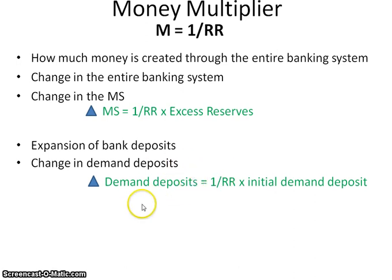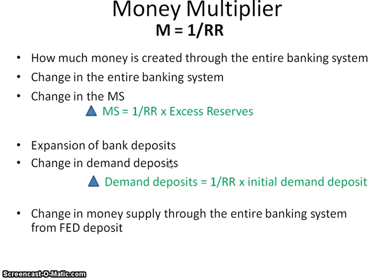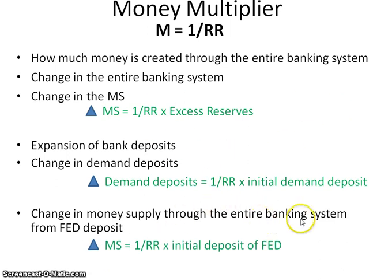Another way questions can be asked is about the Fed. The Fed doesn't just print money; instead, it gets money from banks and utilizes those assets to add them to the money supply. When looking at the change in the money supply through the entire banking system from a Fed deposit, you use 1 over the reserve requirement times the initial deposit of the Fed. It's important to first identify what the question is asking before choosing which of the three formulas to use.